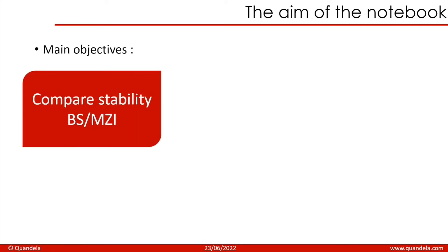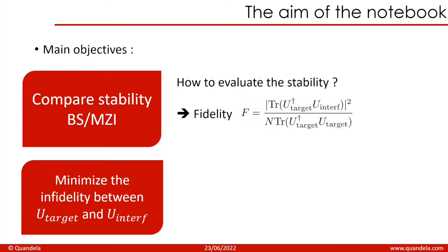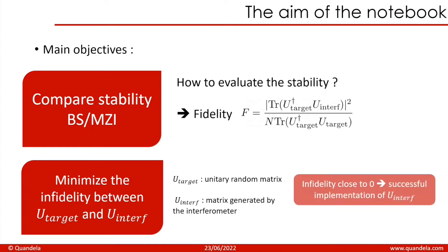The objective of the notebook that we put online on Perceval is to compare the stability between the BS-based circuit and the MZ-based circuit. To compare the stability, we will calculate the infidelity between the U-target and the U-interferometer, but more specially we will minimize the infidelity. The U-target is a unitary random matrix, and the U-interferometer is a matrix that is generated by the interferometer in our program. If the infidelity is close to zero, the implementation is a success.